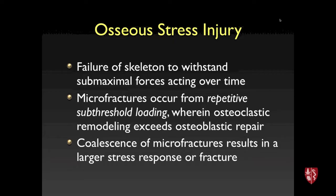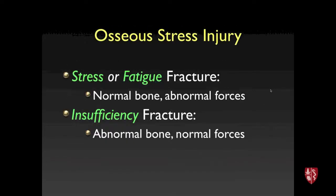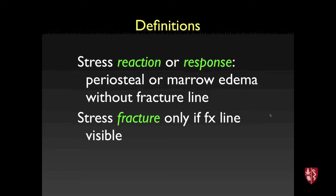Osseous stress injuries represent failure of the skeleton to withstand submaximal forces acting over time. Athletes get micro fractures from repetitive sub-threshold loading. The physiology is that osteoclastic resorption and remodeling is ahead of the reparative process, so micro fractures can coalesce into a larger stress response or stress fracture. It's important to distinguish stress or fatigue fractures, occurring in normal bone with abnormal forces, from insufficiency fractures in osteoporotic individuals with abnormal bone.